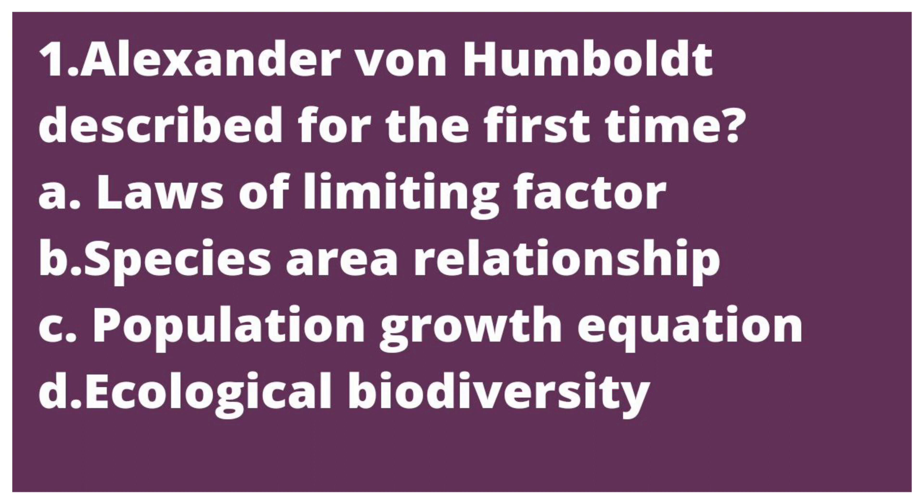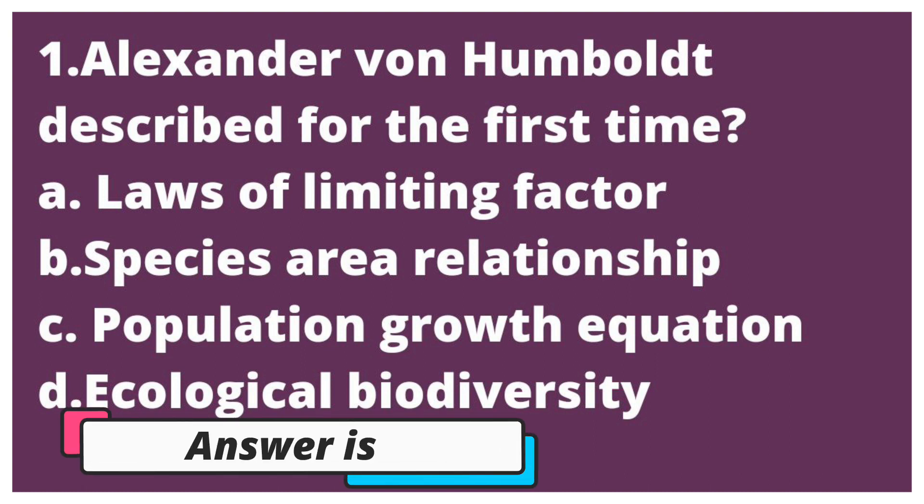The options are: Option A, Loss of limiting factor. Option B, Species Area Relationship. Option C, Population growth equation. Option D, Ecological biodiversity. The correct answer is Option B, Species Area Relationship.